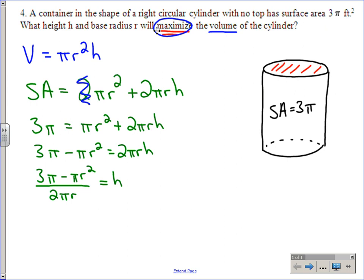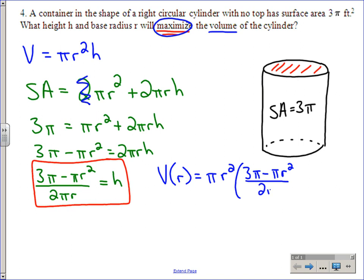Now that we've got our height in terms of r, I can go back to that important equation, which was the volume equation. This time I'm going to write it as V(r). My formula is still πr², but now instead of h, I'm going to put (3π - πr²)/(2πr).